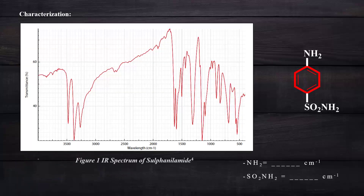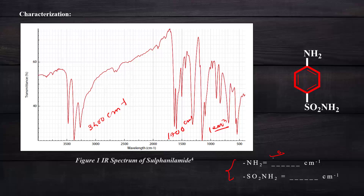In the characterization table, we observe two key IR peaks: one around 3400 cm⁻¹ and another at 1700 cm⁻¹ and 1200 cm⁻¹. We need to identify the functional groups responsible for these two peaks — specifically what frequencies arise from the NH2 and SO2-NH2 groups.